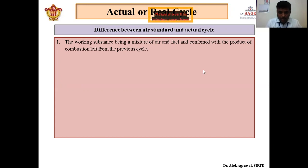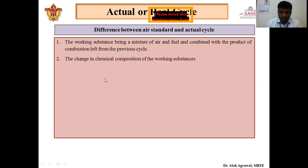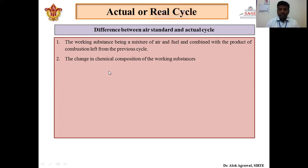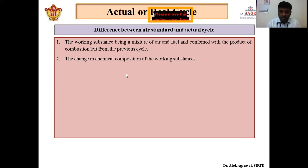In the air standard cycle we only consider pure air as the working fluid. Another difference is the change in chemical composition of the working substance. In the air standard cycle we assume the chemical composition remains constant throughout combustion. But in the actual cycle, fuel burns and its chemical composition changes continuously, and it is because of this chemical composition change that energy is produced.